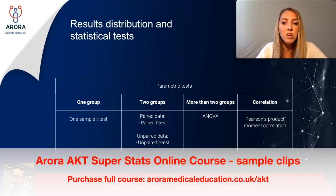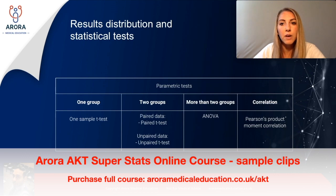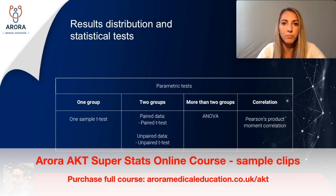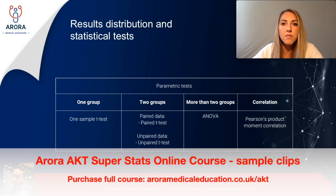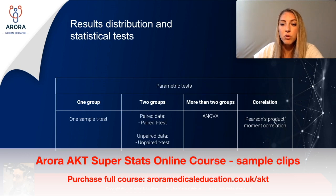If we have two separate groups — say one group on a statin and another on placebo with cholesterol levels checked after three months — we need an unpaired t-test because we have two different groups. If we're looking at more than two samples, we use an analysis of variance test, known as an ANOVA test — for example, measuring cholesterol in four different ethnic groups. If we're looking to demonstrate correlation between two variables, such as whether weight influences height, we can use a Pearson's product moment correlation test.